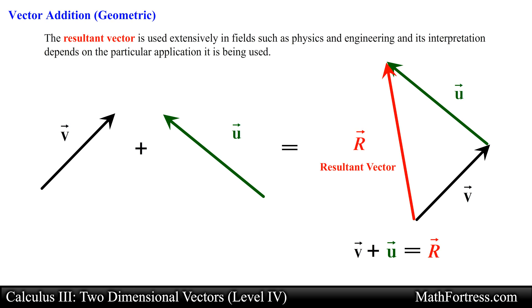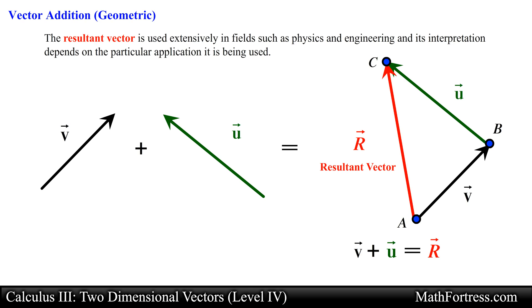This vector is usually referred to as the resultant vector. The resultant vector is used extensively in fields such as physics and engineering, and its interpretation depends on the particular application. In this example the resultant vector represents the displacement of a particle from point A to point C. This method of adding vectors is sometimes called the tail-to-head method or triangle law.